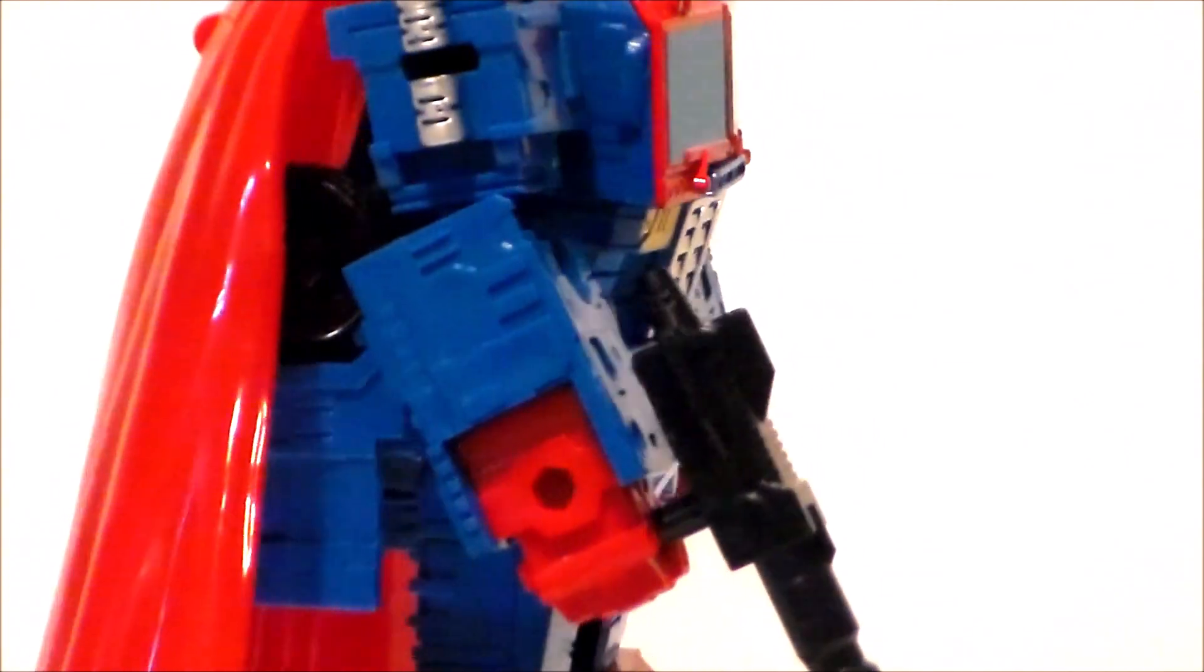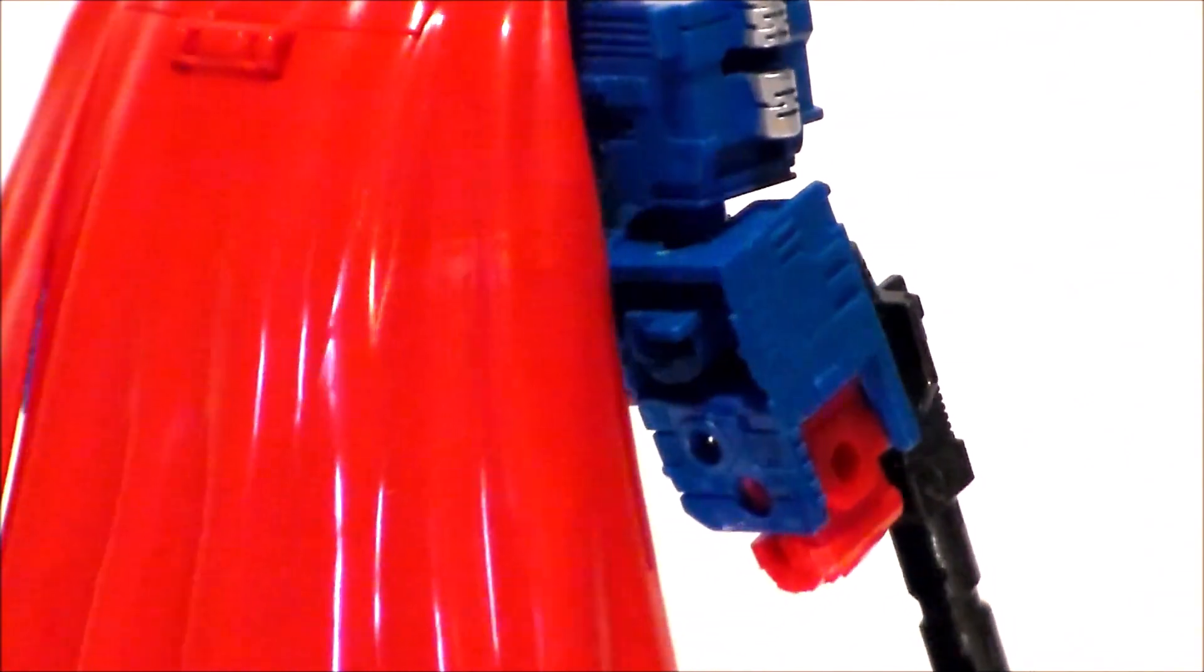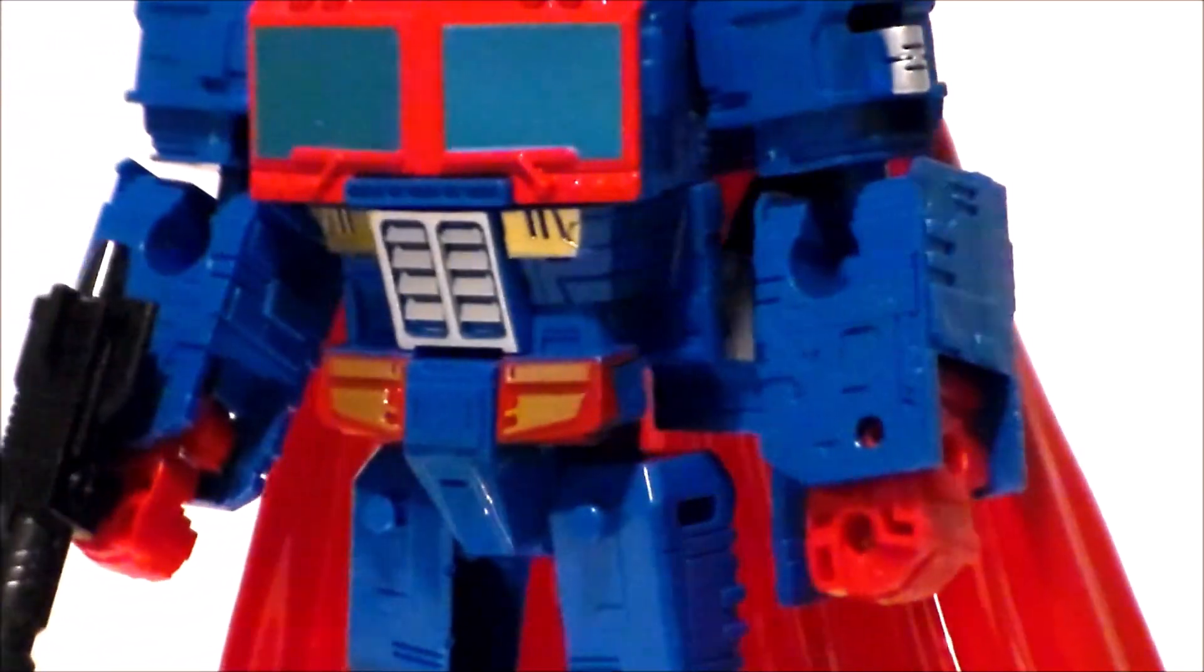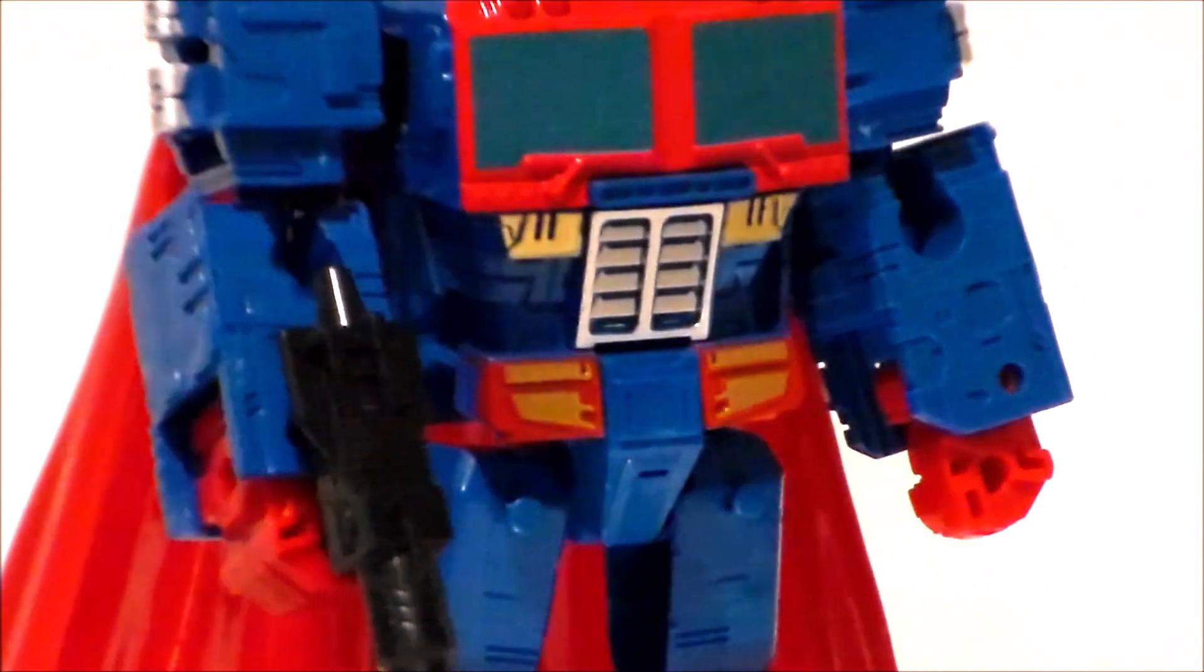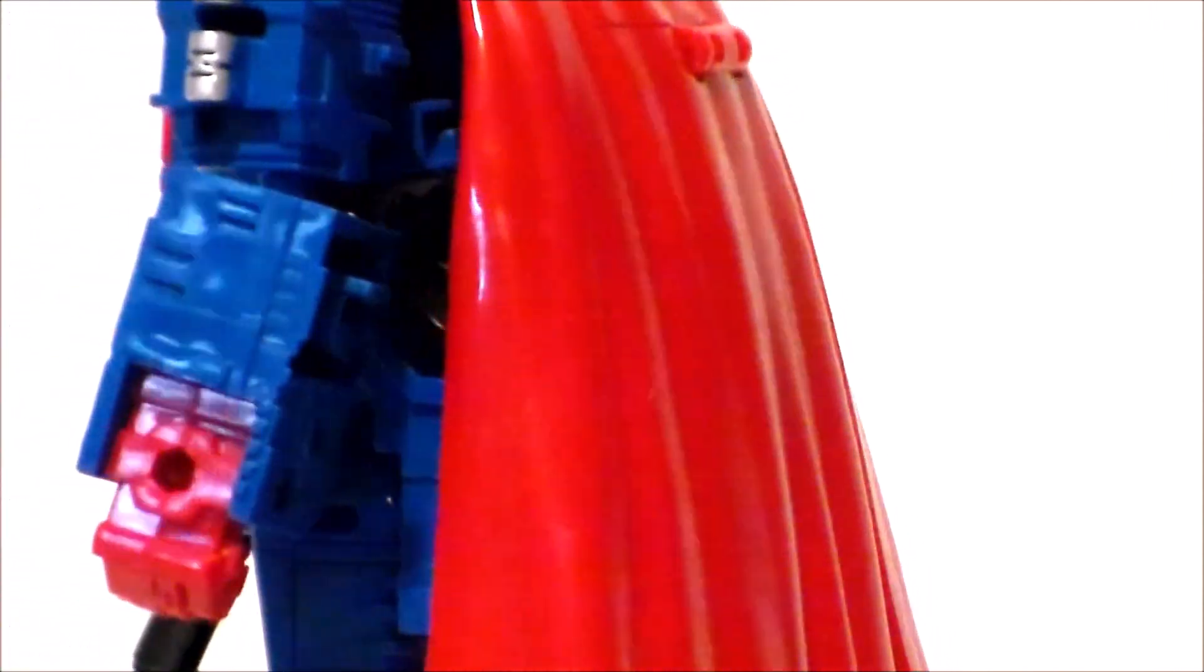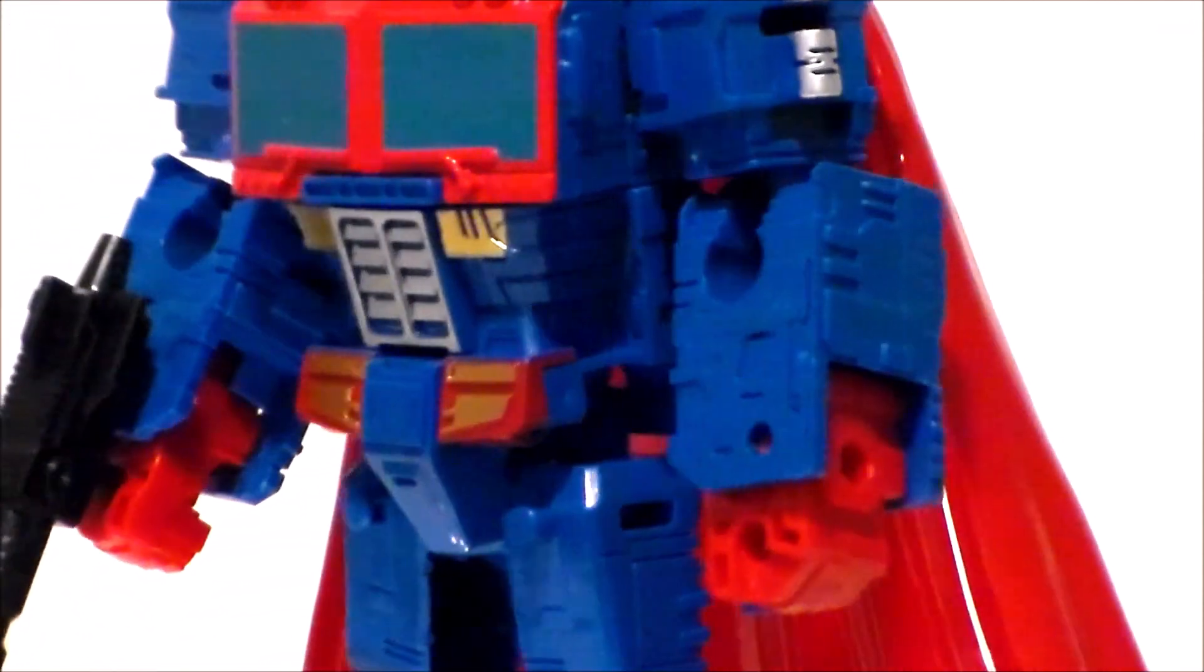Now looking at the midsection of the figure, again very cool. The KO Kingdom Core Class figure. I love the wrinkles in the cape. We got red hands. I like the red and the gold around his waist, again very Superman-esque.